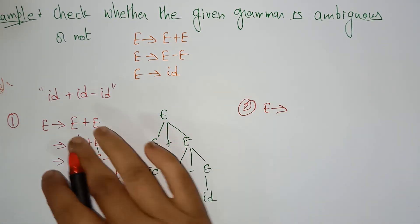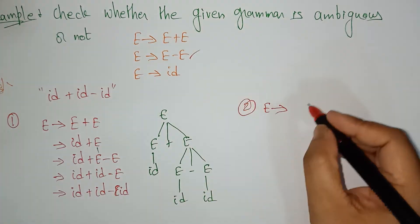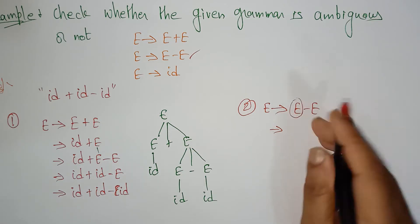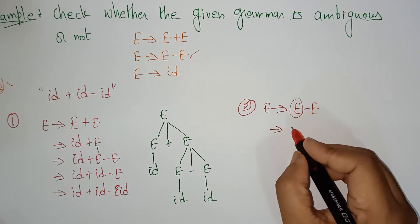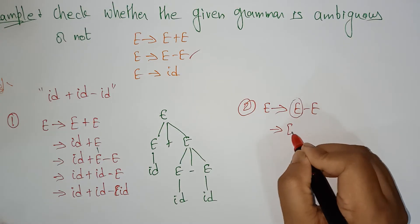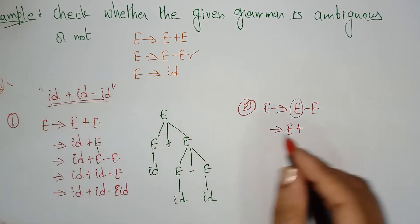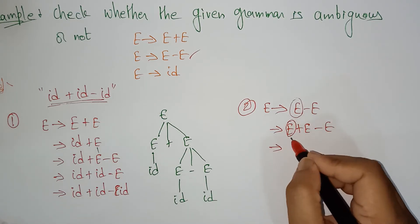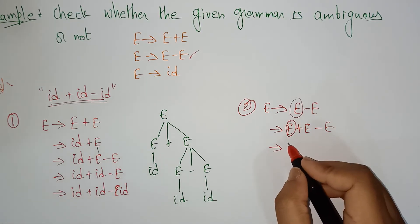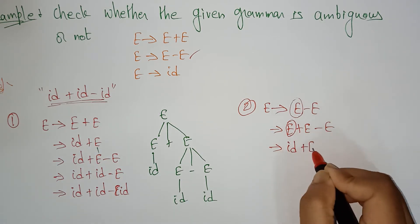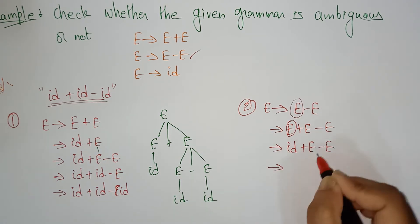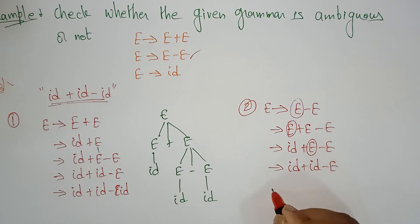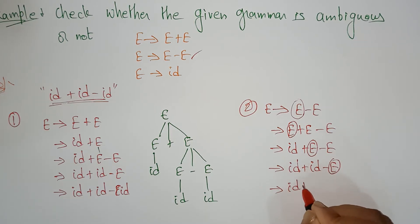This is also leftmost derivation. In place of e plus e, I am taking this production e minus e. First, target the left non-terminal. In place of e, I am writing e plus e because this is the string I want to get. So e plus e minus e. Here the leftmost non-terminal is replaced: e with id, giving id plus e minus e. Replace e with id minus e. Last non-terminal: replace e with id.